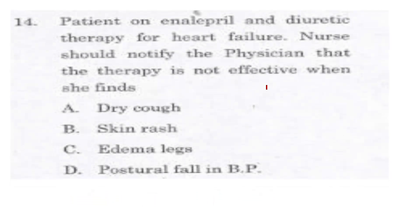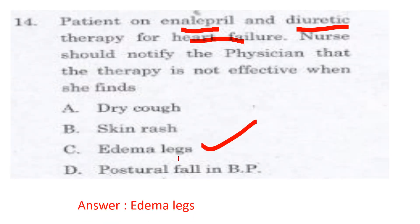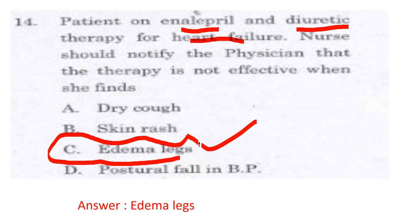Question 14: A patient is already taking enalapril and diuretics for heart failure. The nurse should notify the provider that therapy is not effective. Option A is dry cough, Option B is skin redness, Option C is edema, Option D is postural hypotension. The answer is C — edema, indicating the therapy is not effective.